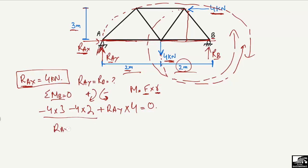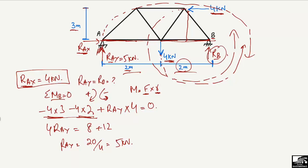Rearranging, RAy multiplied by 4 equals 8 plus 12, which gives RAy equal to 20 divided by 4, so RAy equals 5 kilonewtons. This means the vertical reaction at A is 5 kilonewtons. Now to find RB, we can use the vertical equilibrium equation.